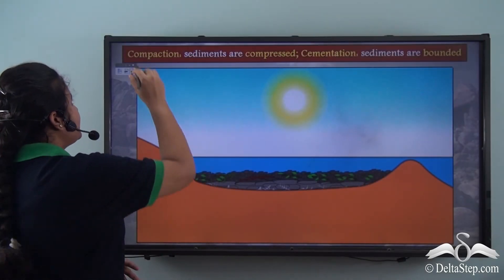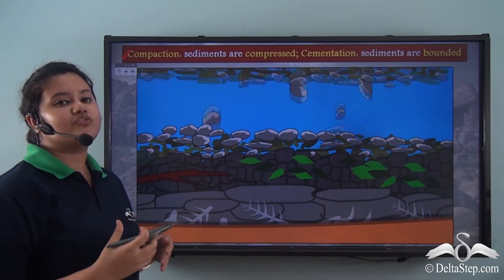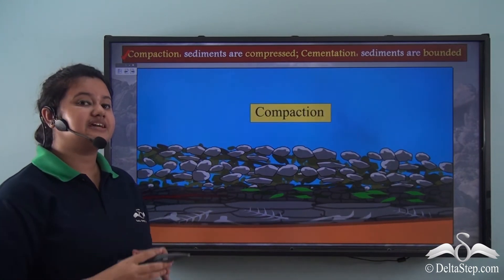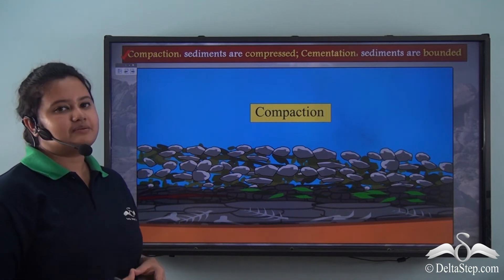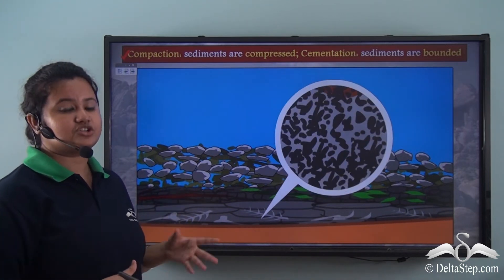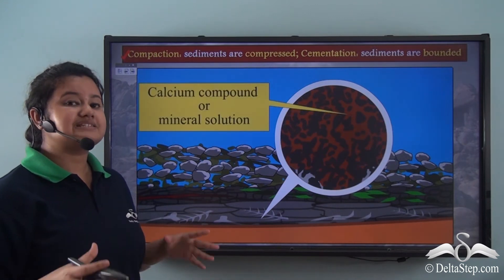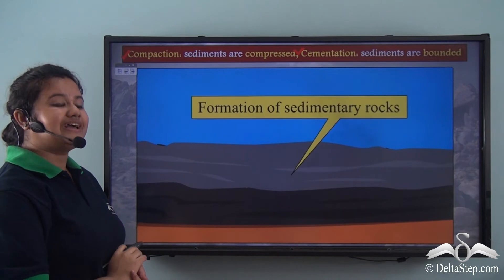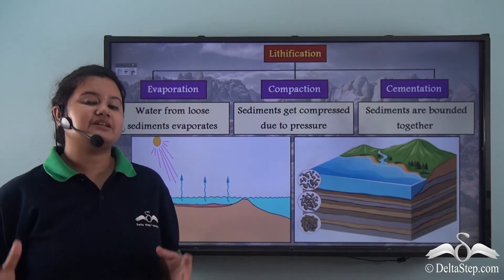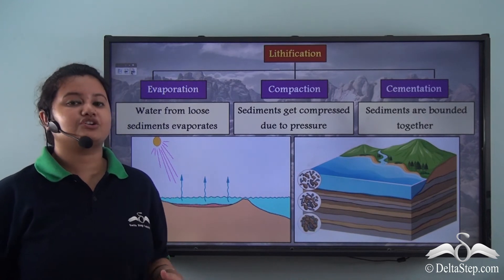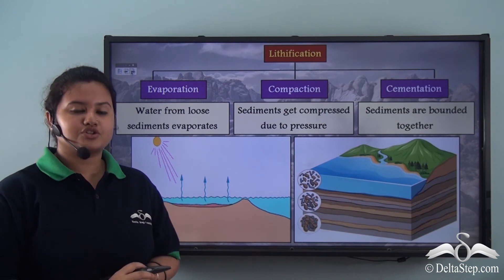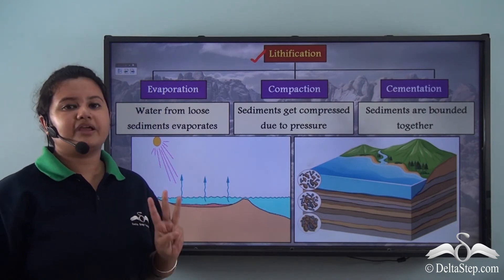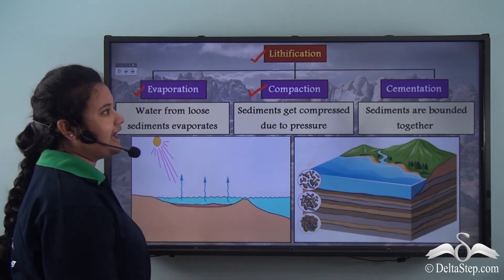The second process is compaction. As the sediments are deposited layer over layer, pressure is created by the layers of rocks lying above. Eventually, due to increasing pressure, the sediments become more compact and consolidated. Sometimes a sticky substance — a mineral solution like a calcium compound — seeps into the sediments and sticks them together. This process is called cementation. These three processes — evaporation, compaction, and cementation — lead to the formation of sedimentary rocks.